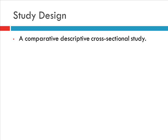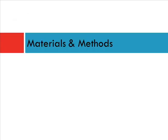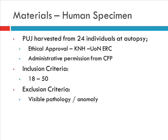I carried out a comparative, descriptive, cross-sectional study. For the human specimen, I used 24 individuals. The ureters were harvested at autopsy. Ethical approval was sought from Kenyatta National Hospital and the University of Nairobi Ethical Review Committee, and administrative permission was sought from the funeral parlor where the autopsies were carried out. Consent from the relatives was also sought. I only used adults aged between 18 and 50 years old, and I excluded any kidneys that showed any physical pathology or anomaly.